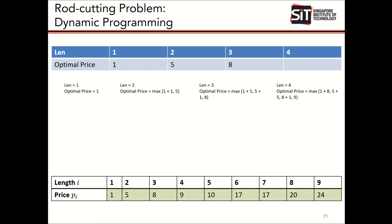For the last case where length equals four, there are four ways to cut it. I can cut into one and three, two and two, three and one, or not cut it at all. If I cut into one and three, I take the value of one from the optimal price table and three from the price table, giving one plus eight.